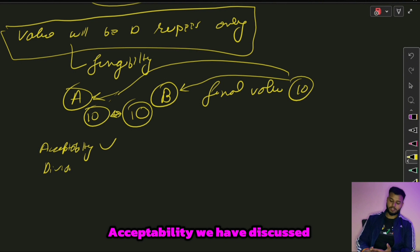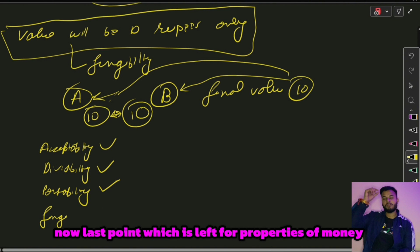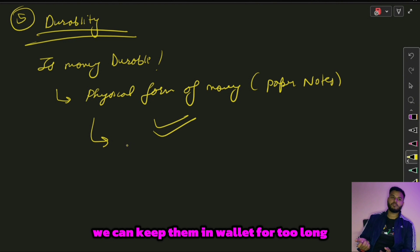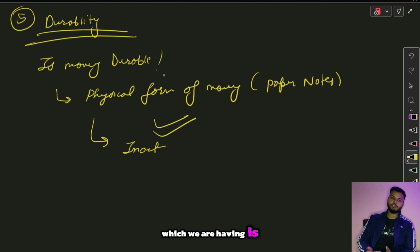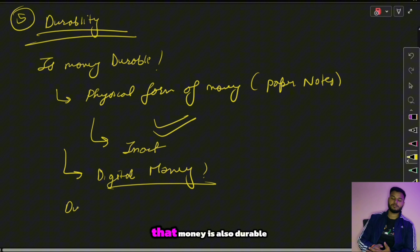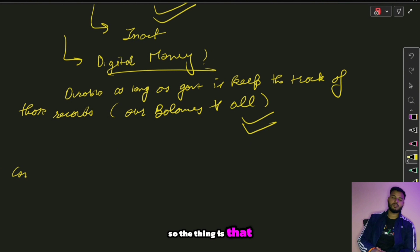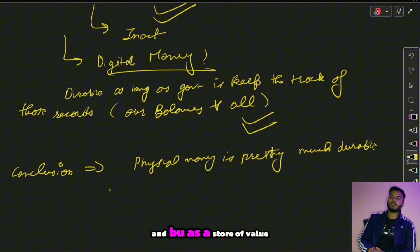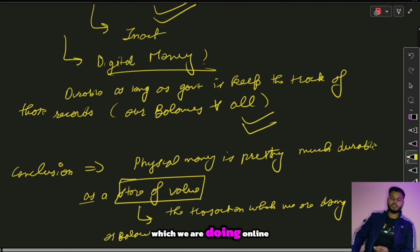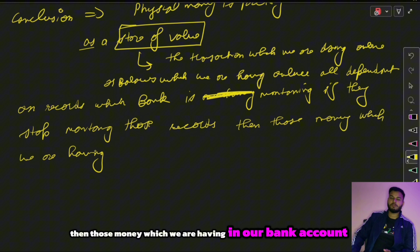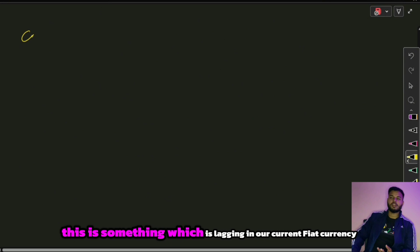The last property is durability. Physical paper notes are pretty much durable — we can keep them in a wallet for a long time and they remain intact. Digital money in our phones is also durable as long as the government keeps track of those records and maintains our balances. However, as a store of value, online balances are entirely dependent on the records the bank maintains — if the bank stops maintaining those records, that money has no value. This is something that is lacking in our current fiat currency.